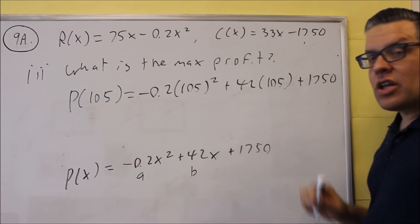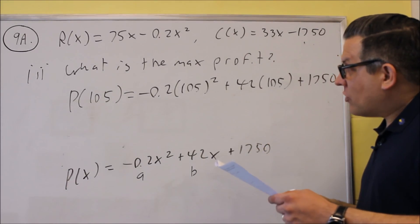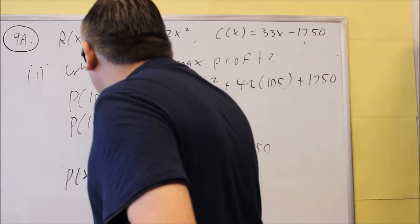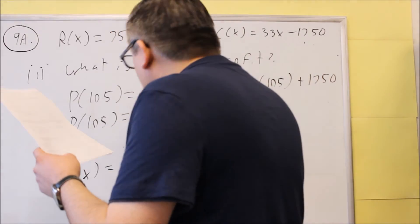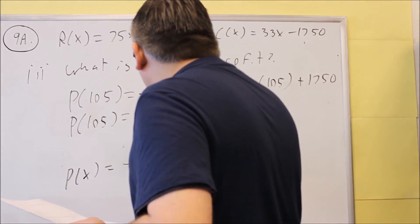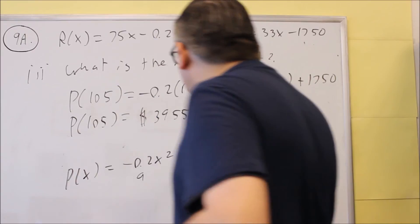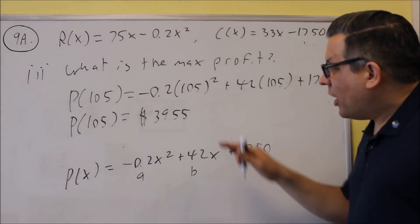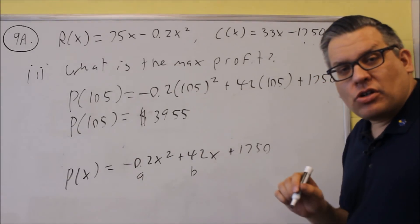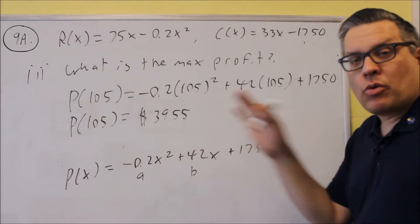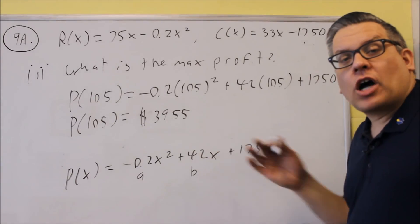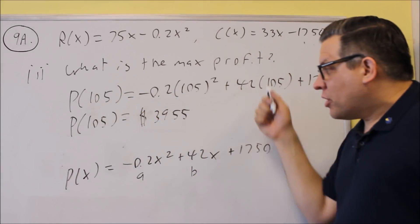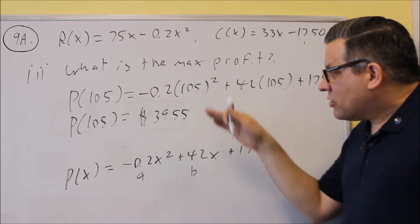When I work all that out on my calculator, you should get 3955. So that's how much profit we're going to make according to that model. In part two, we had to use the vertex formula—that was all we had to do because it just asked for how many watches must be sold to maximize the profit. Then in part three, we had to actually plug it back into the original formula to get the answer.